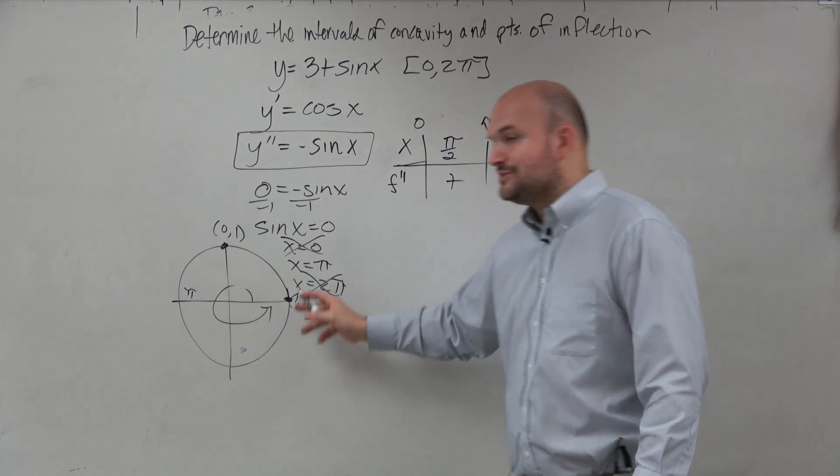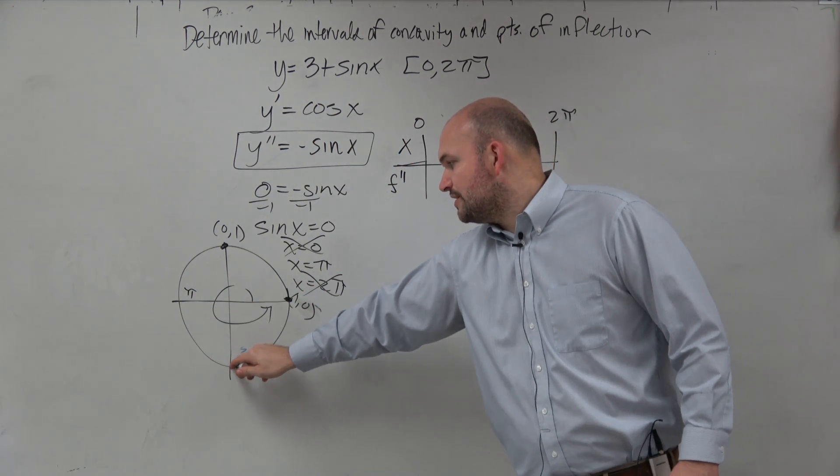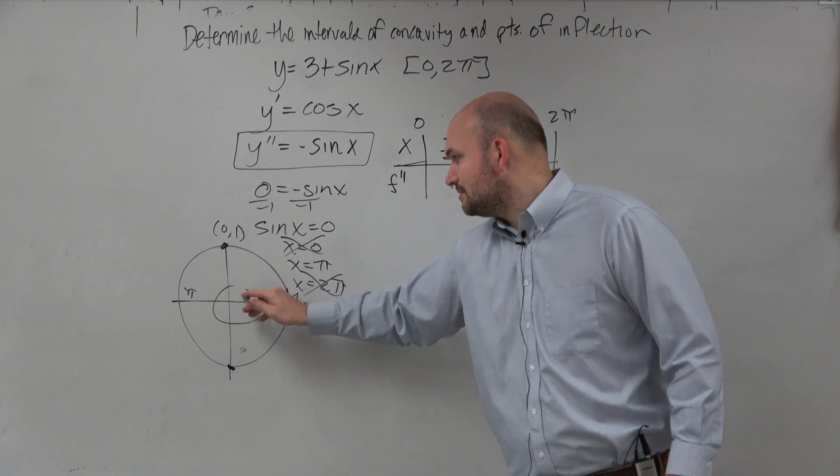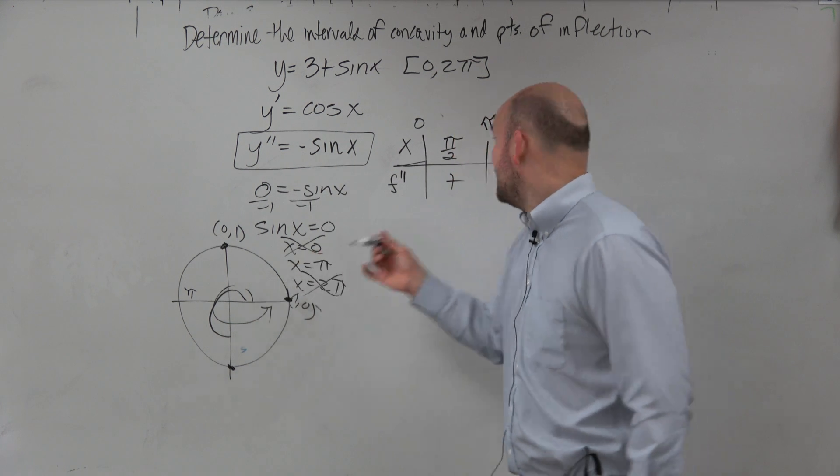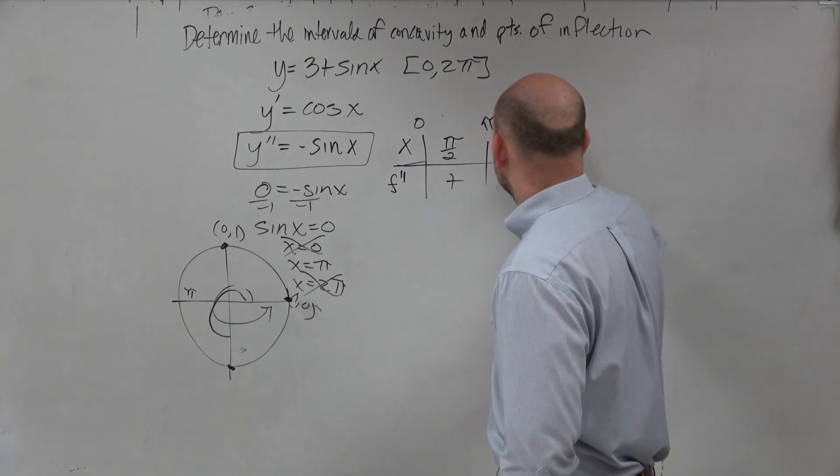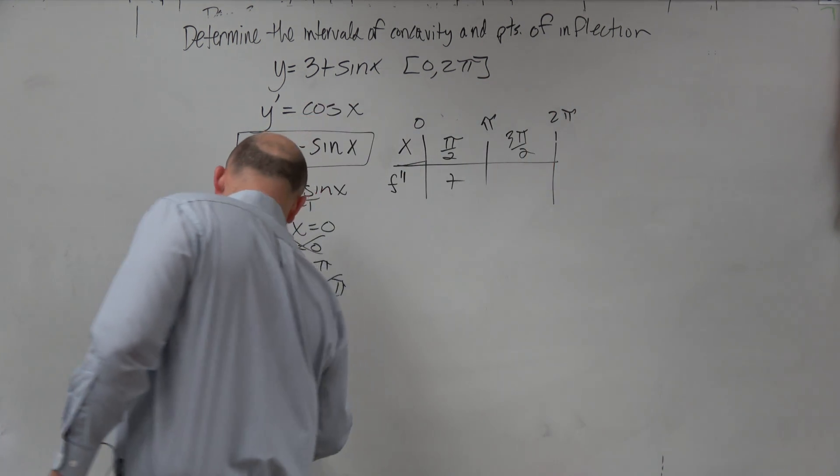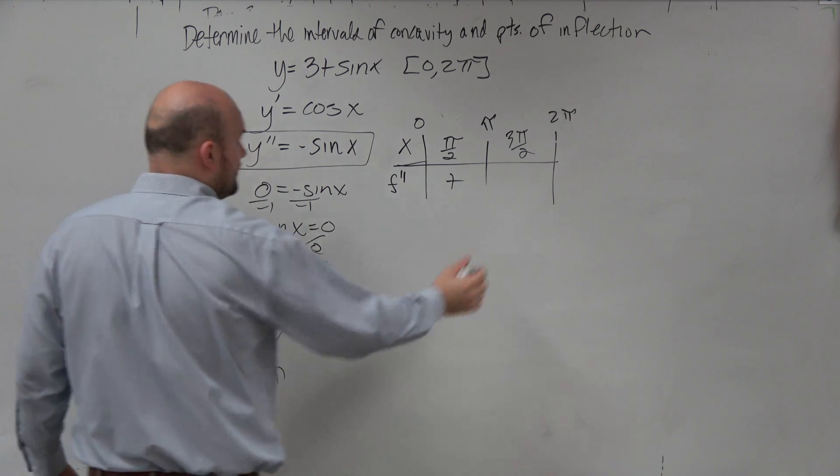And then between pi and 2 pi, how about we do this one over here? This angle from there to there? This is pi halves, 2 pi halves. This would have to be 3 pi halves. I like 3 pi halves. 3 pi halves is 0 comma negative 1. Oh, that's negative.